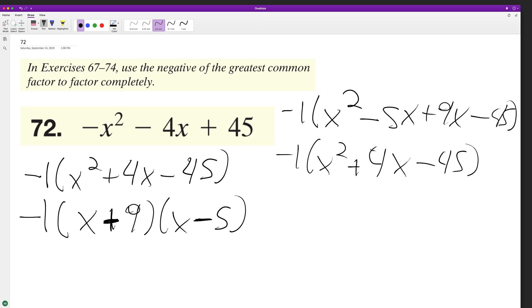Distributing the negative 1, we get negative x squared minus 4x plus 45, which matches our original trinomial.